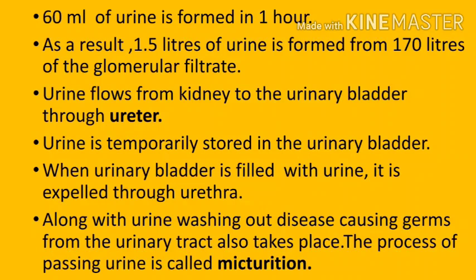Urine formed inside the kidney flows to the urinary bladder through the ureter, where it is temporarily stored. When the urinary bladder is filled with urine, it is expelled through the opening known as the urethra. Along with urine, disease-causing germs are also washed out from the urinary tract. The process of passing urine is called micturition.